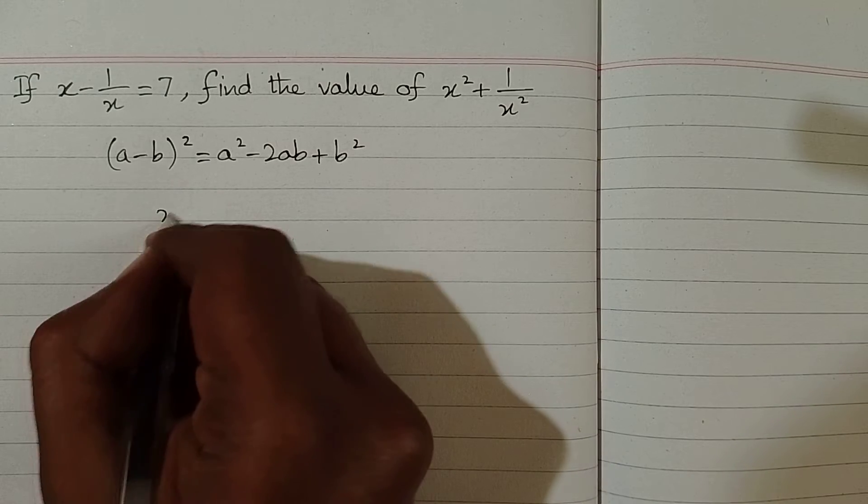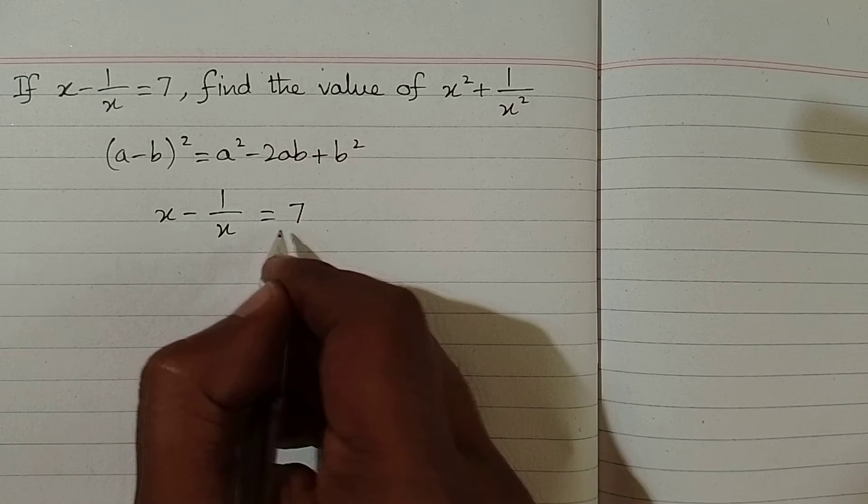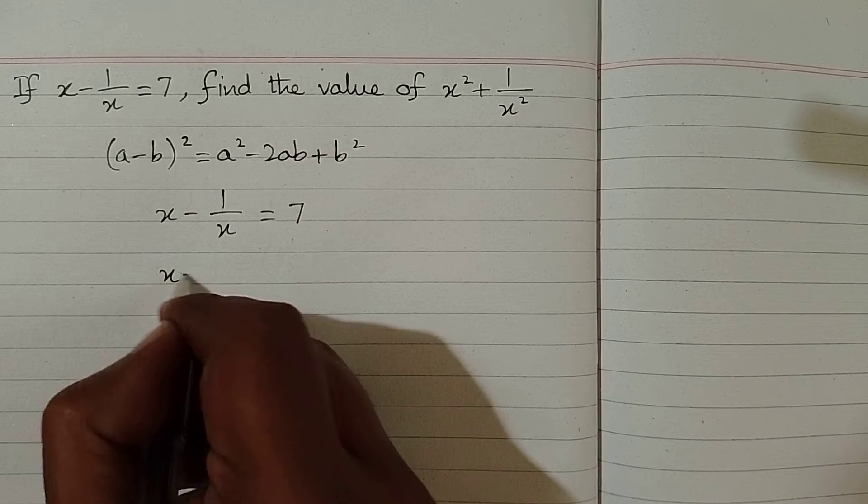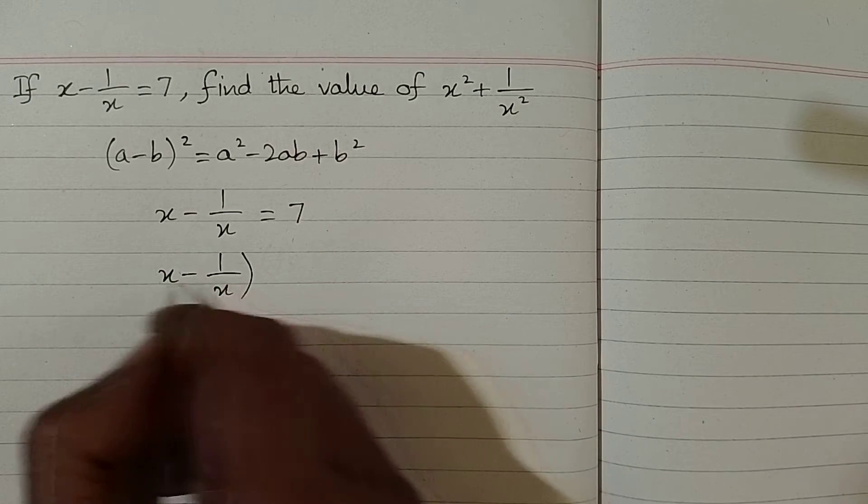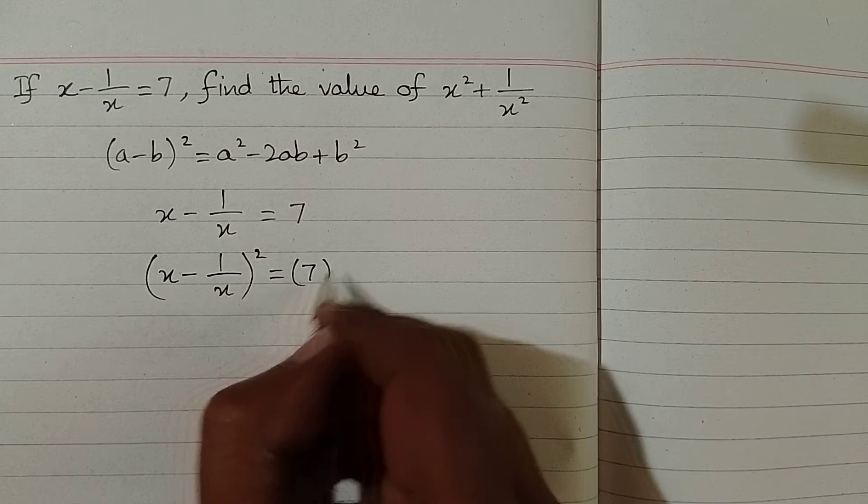So we have x minus 1 upon x is equal to 7. First of all we can take the square of both sides, so we have x minus 1 upon x the whole square is equal to 7 square.